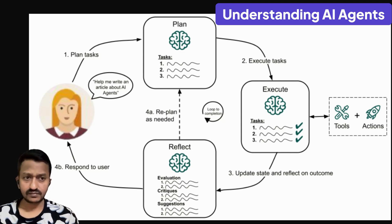As you can see in the image, it's a simple workflow of an AI agent with a simple example scenario. You can see there are basically four steps: the planning step, the execution step, reflection step, and re-planning step.